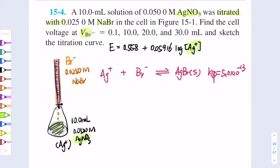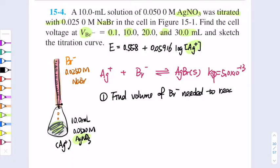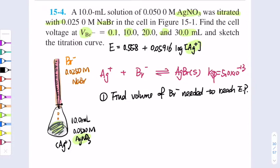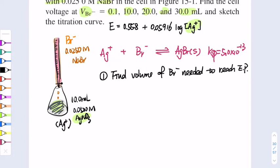The question asks for the potential voltage at different volumes when we add bromide ion. First, we need to find the volume of bromide ion required to reach the equivalence point. From the balanced equation, there is a 1:1 mole ratio, so moles of silver ion equals moles of bromide ion at the equivalence point. Moles of silver ion = 0.500 M × 10 mL = 0.5 mmol.